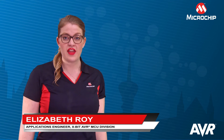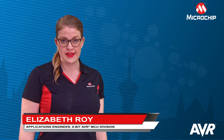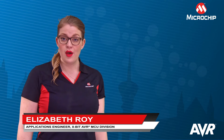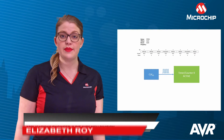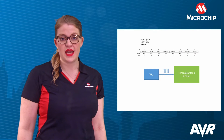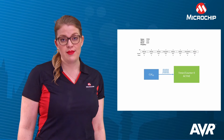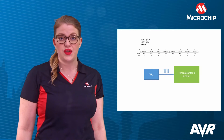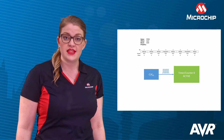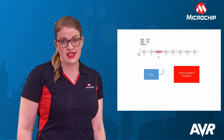Hi, in this video we will have a quick look at the AVR power reduction registers. The power reduction registers are used to optimize the power use in an application. This is achieved by enabling the clock provided to a particular peripheral when it is used, and disabling the clock when the peripheral is not needed.